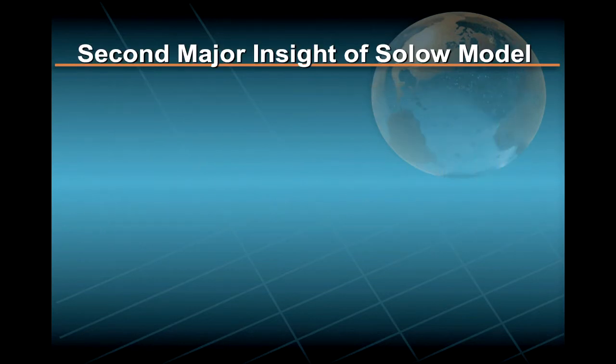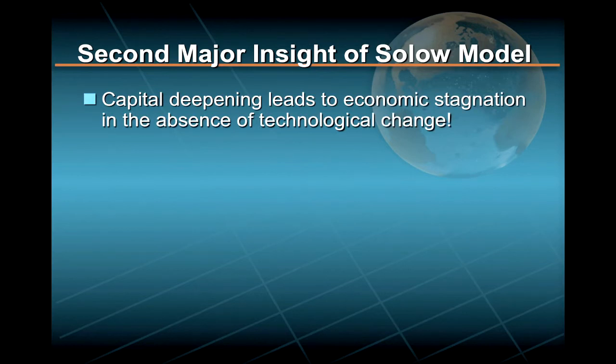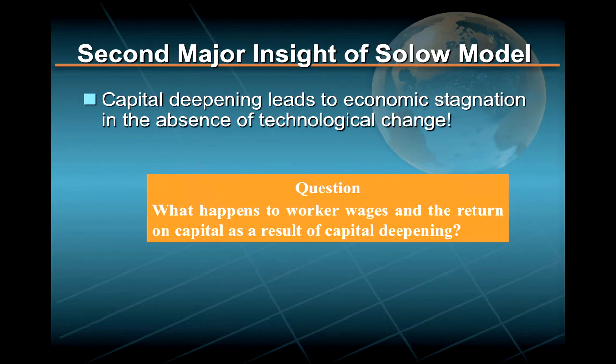The second major insight of the neoclassical growth model is that, while capital deepening can dramatically increase the productive output of an economy, it will eventually lead to economic stagnation in the absence of technological change. To understand this important point, we have to answer this question: What happens to worker wages and the return on capital as a result of capital deepening?